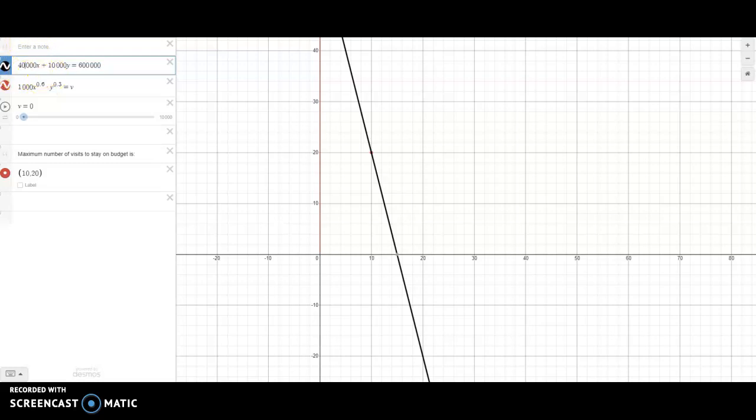What I have plotted here in Desmos is our constraint, 40,000x + 10,000y = 600,000, and that's this straight line. It's in two dimensions because it only involves two variables and it's a two-dimensional function. It has nothing to do with the number of visits. Then what I've plotted here is our objective function, but notice that I have that equal to V.